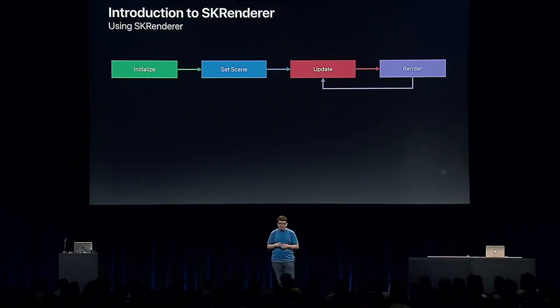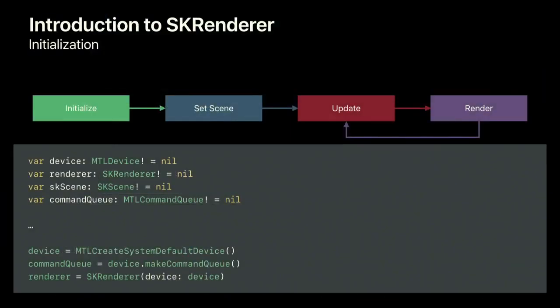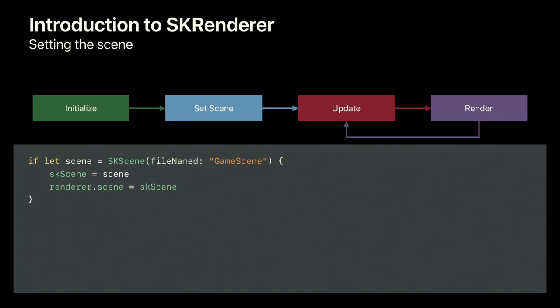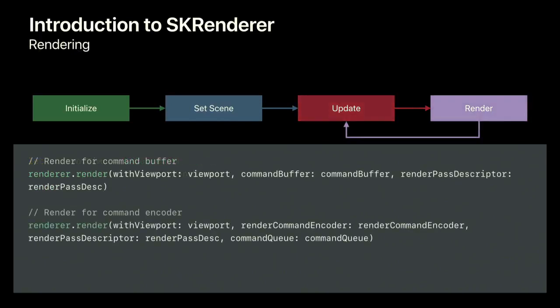For initialization, all you need to do is provide SKRenderer with a Metal device. Setting the scene works exactly the same as with SKView — just set your scene on SKRenderer's scene property. For updating, simply pass in the current time. For rendering, call the render method, of which there are two flavors. Both ask you to specify the viewport — a CGRect defining the area SpriteKit will draw into — and a Metal render pass descriptor describing the render target.